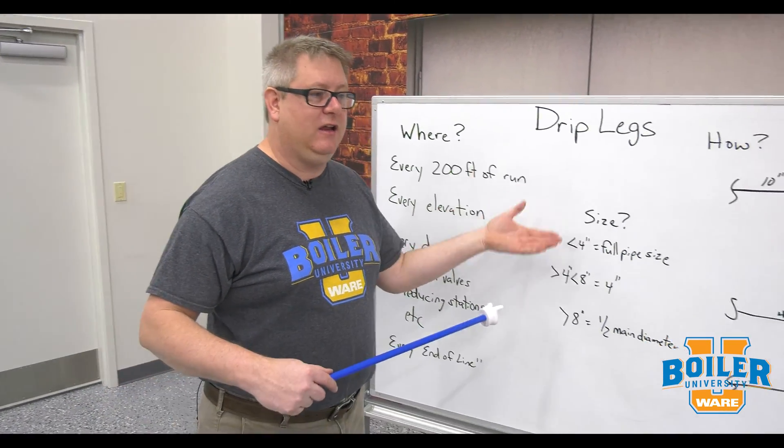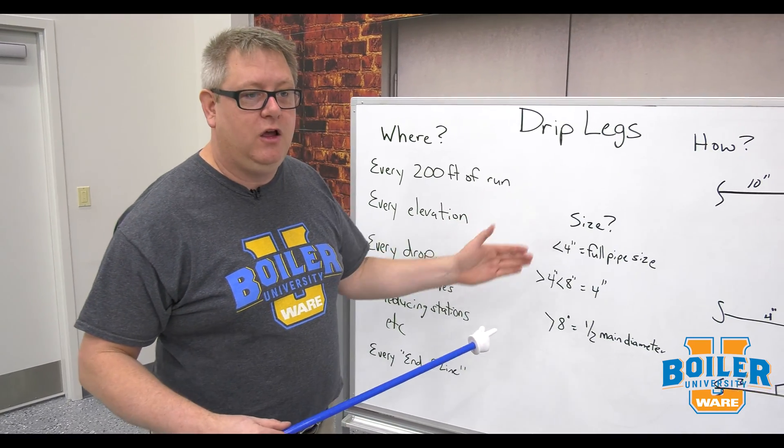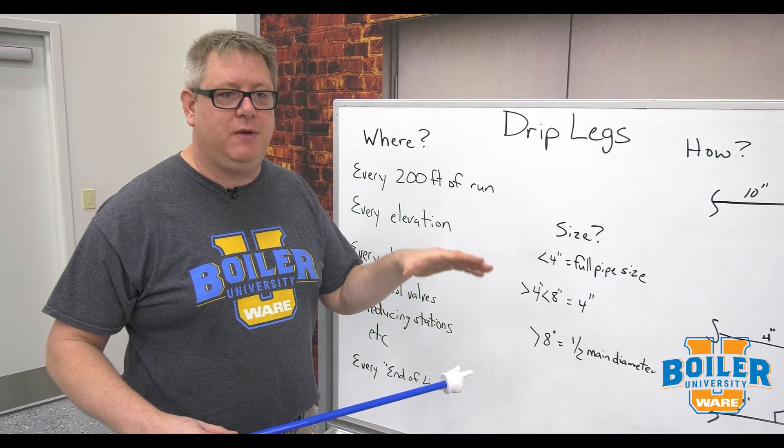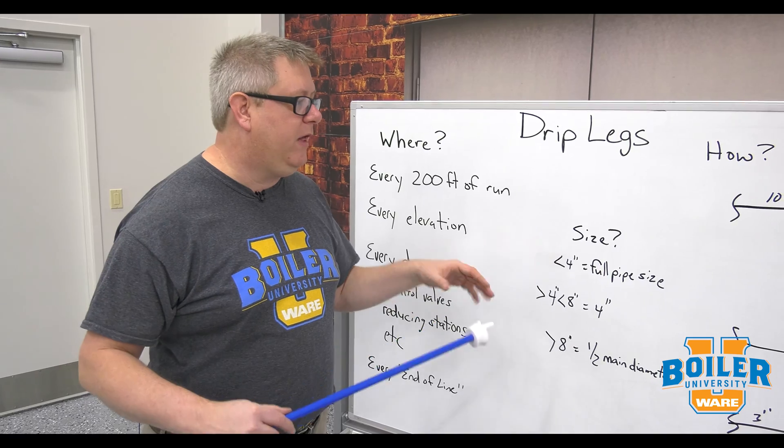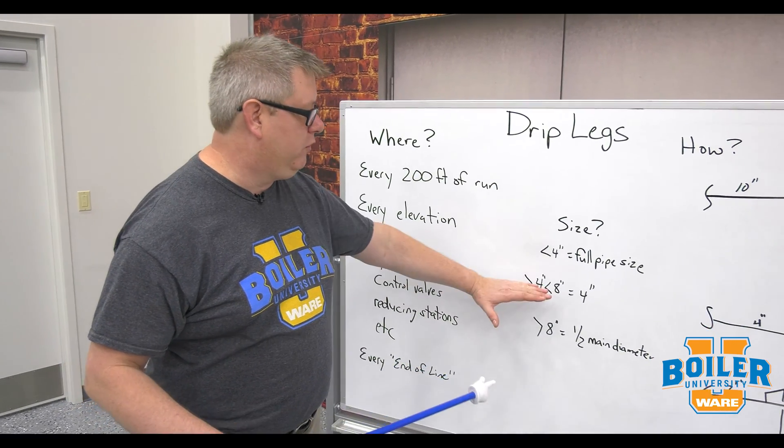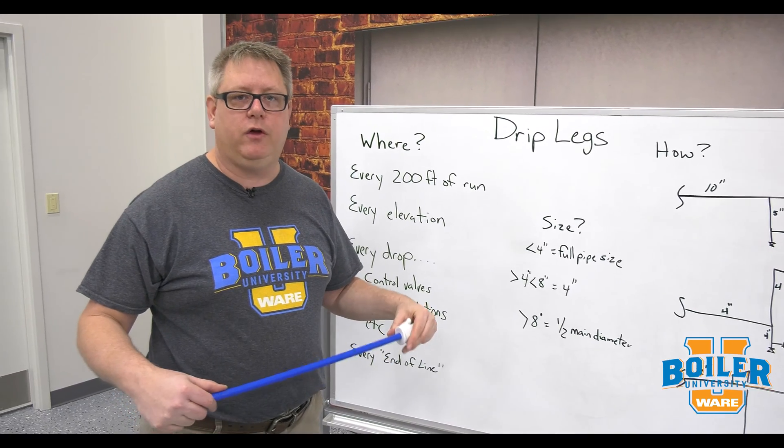A 2-inch main, a 2-inch drip leg. You know that really the cost in piping is the labor, so if we go ahead and make those drip legs full-size or as large as practical, then we're going to get good condensate removal at those points.